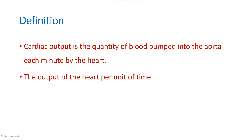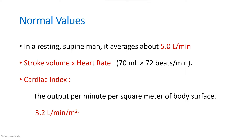You can start your answer with the definition. Cardiac output is the quantity of blood pumped into the aorta each minute by the heart — in other words, the output of the heart per unit time. The normal value in a resting man averages around 5 liters per minute, since cardiac output equals stroke volume multiplied by heart rate (70 × 72 ≈ 5 L/min).